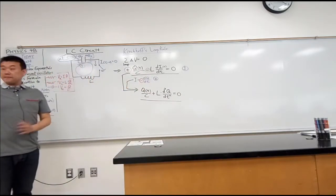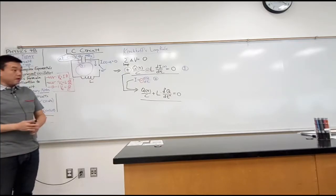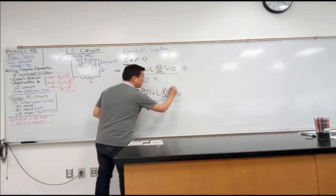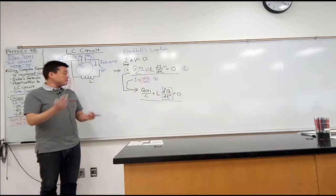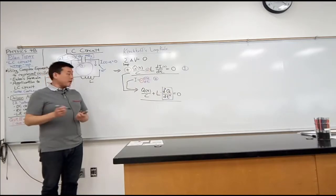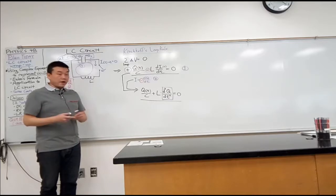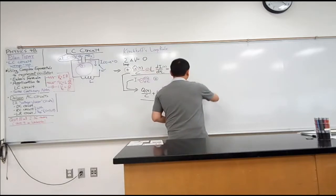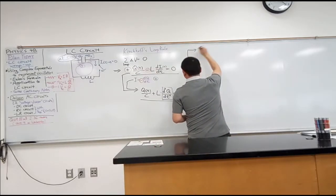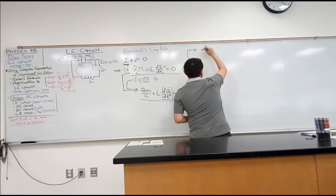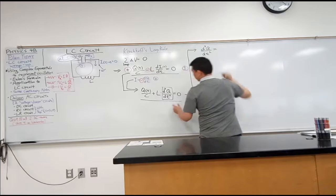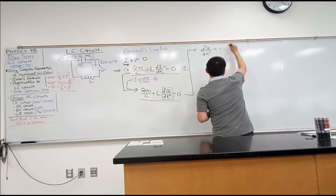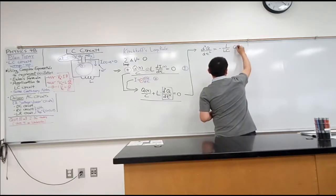With differential equations, we take the highest-order derivative and solve for it — that gives us a standard form. So solving for the second-order derivative: the second derivative of Q equals minus one over LC times Q of t.